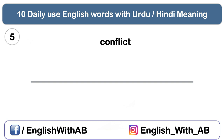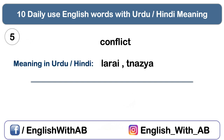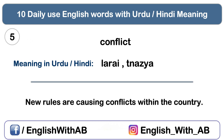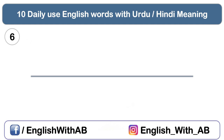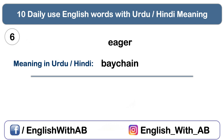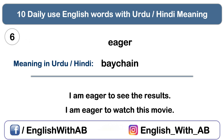On number five we have 'conflict'. Its Urdu meaning is 'ladai' or dispute. For example: New rules are causing conflicts within the country, meaning these new rules are becoming a cause of conflict in the country. Next we have 'eager'. Its Urdu meaning is 'bechan' — anxious or restless. For example: I am eager to see the results. I am also eager to watch this movie.